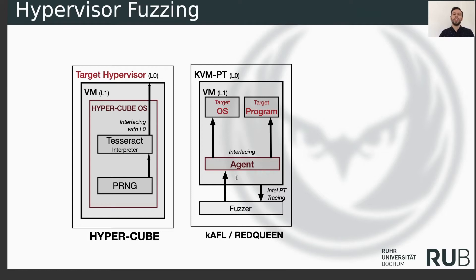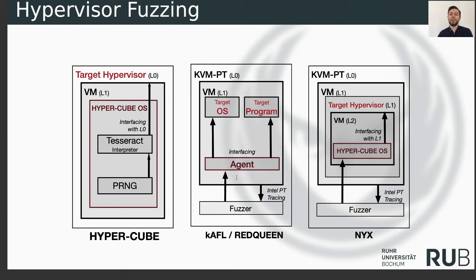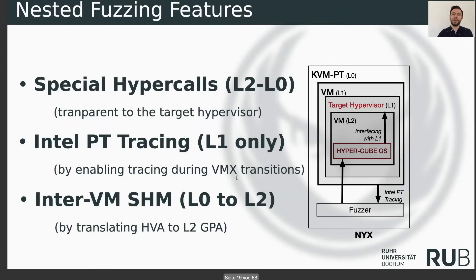NUX is basically a combination of both. We are using our KVMPT at L0, and inside the virtual machine is the target hypervisor we want to fuzz. This target hypervisor boots HyperCubeOS — a modified version of it. HyperCubeOS becomes the agent component, which expects data from the fuzzer and provides the payload to the target hypervisor. This does not work out of the box, so we made some modifications to KVMPT: we introduced new hypercalls for communication between HyperCubeOS and the fuzzer, we added Intel PT tracing to the target hypervisor at L1, and we built intra-VM shared memory capabilities for L0 to L2 communication.